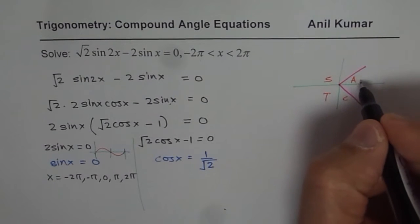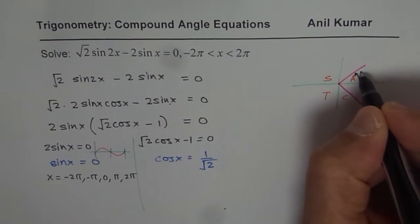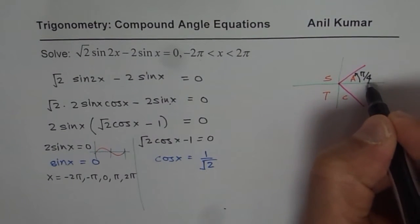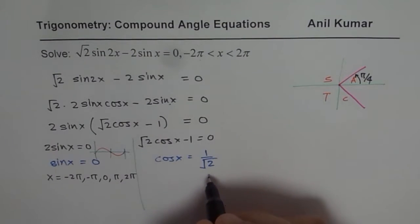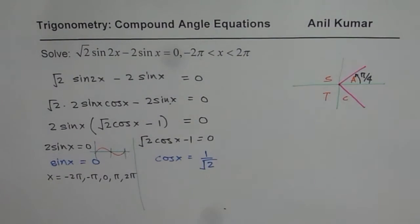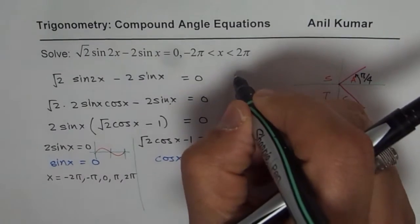These two possible solutions, let us find the acute angle. That will be π/4 for us, right? So that angle gives you 1/√2. So we can write down the solutions. Let me write down solutions on this side now.